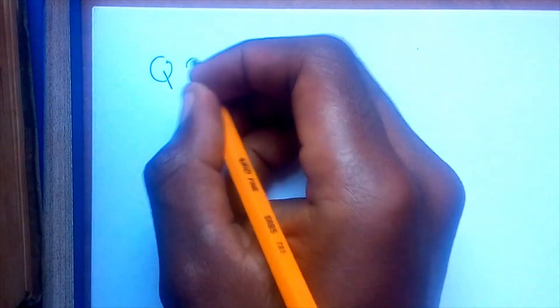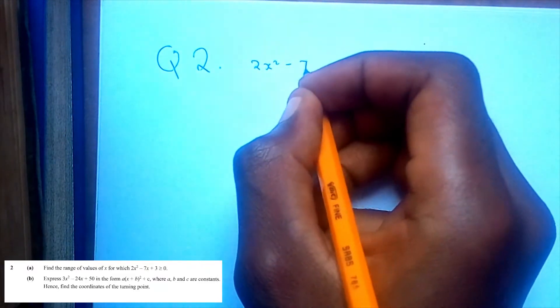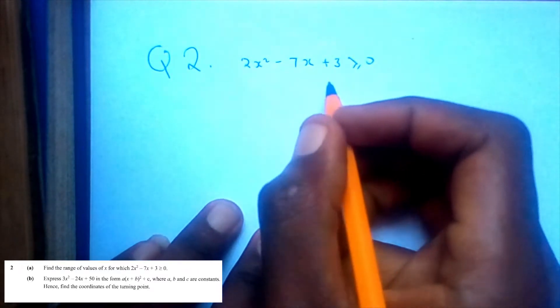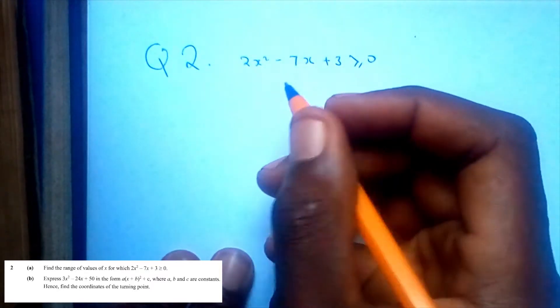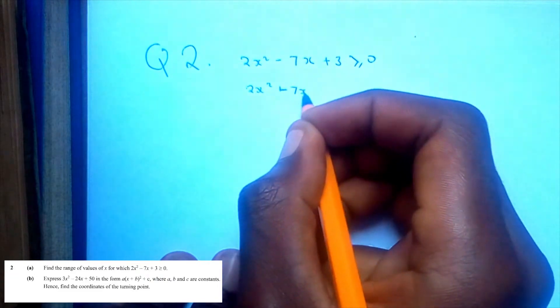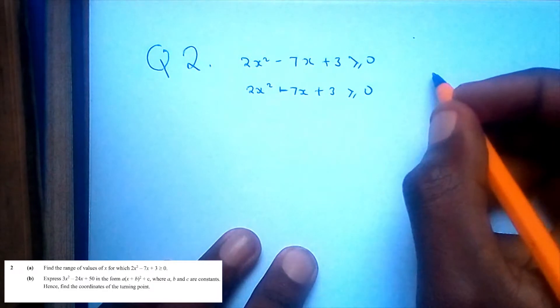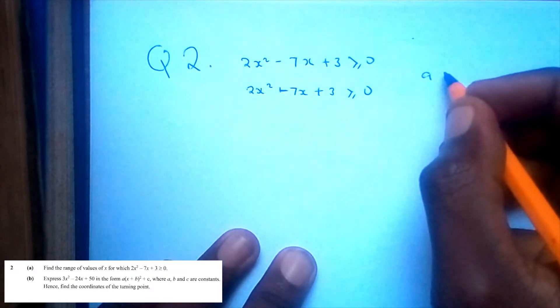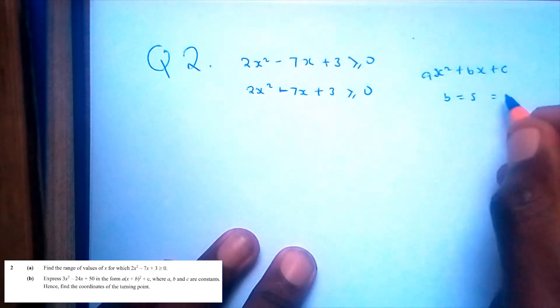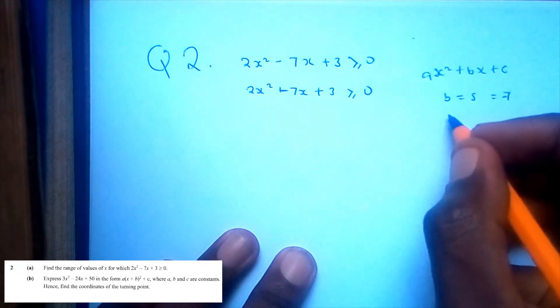Question 2a: find the range of values of x for which 2x² - 7x + 3 ≥ 0. We'll solve this using factorization. The equation is in the form ax² + bx + c, where our sum is -7 and our product is a times c.